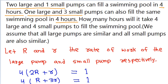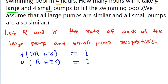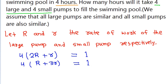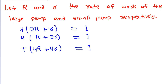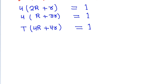Now, we have to find in how many hours we need 4 large and 4 small pumps to fill the swimming pool. So here it will be 4 times capital R plus 4 times small r, and we don't know the time taken. So we multiply by T, that is equal to 1, and we have to find the value of T. We assume these as equation 1, equation 2, and equation 3.